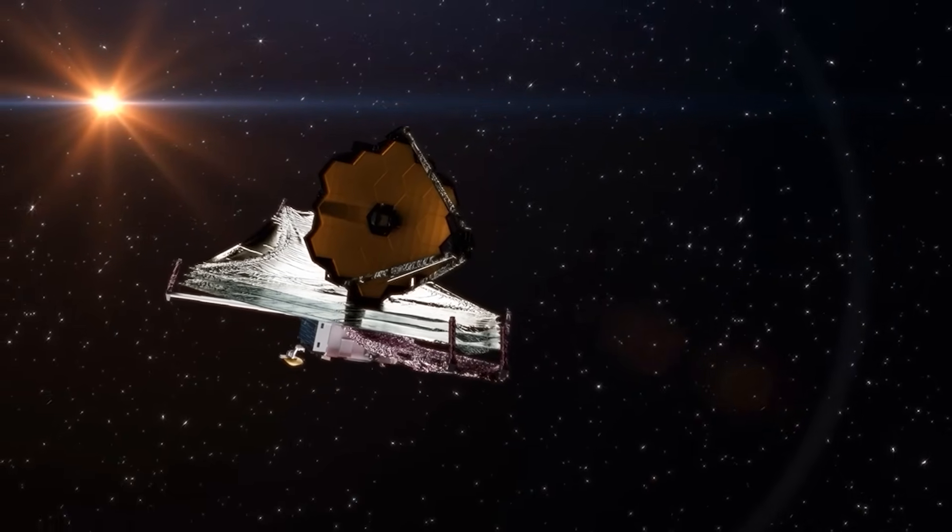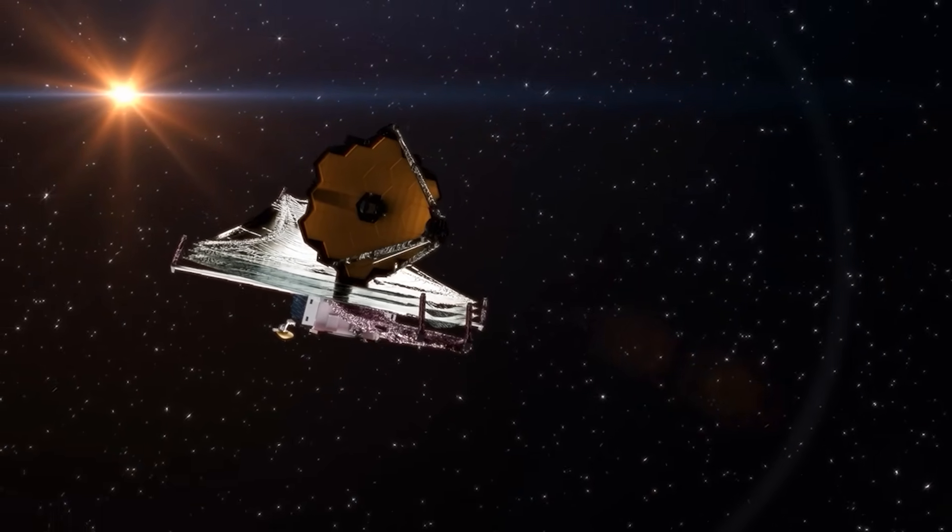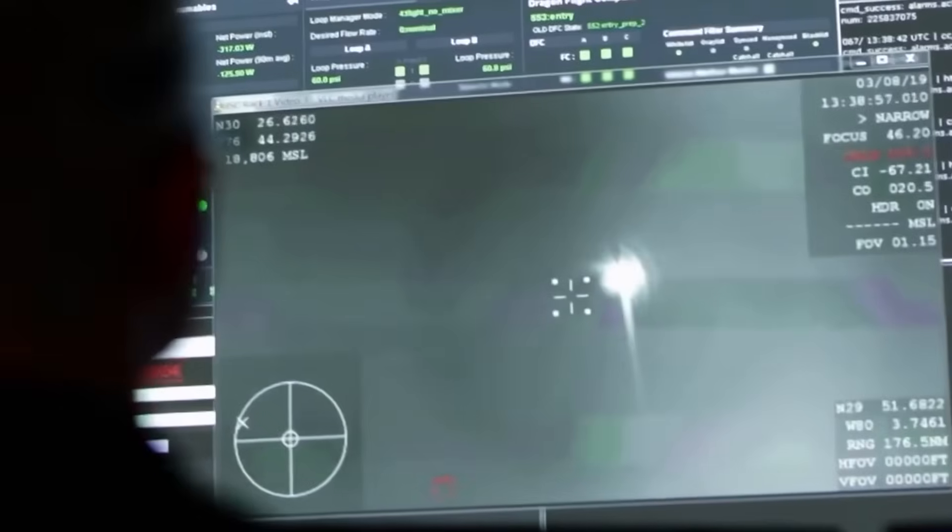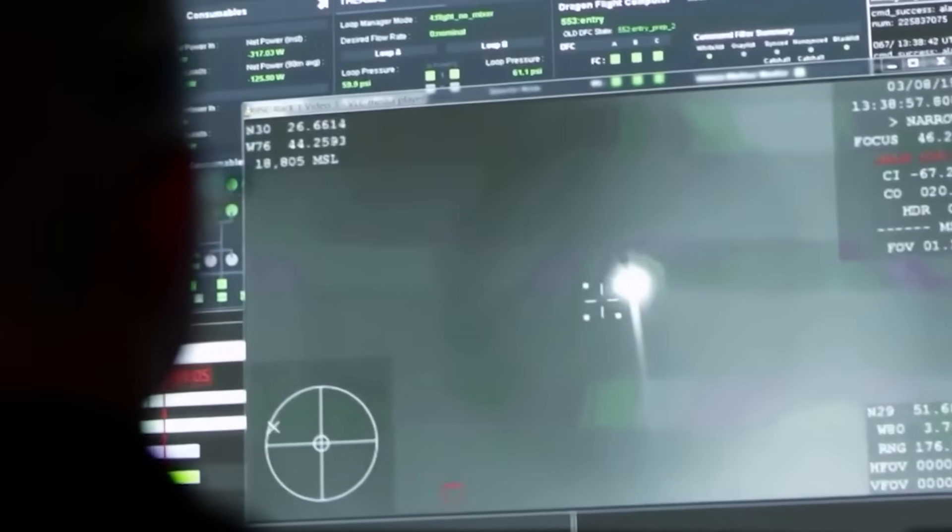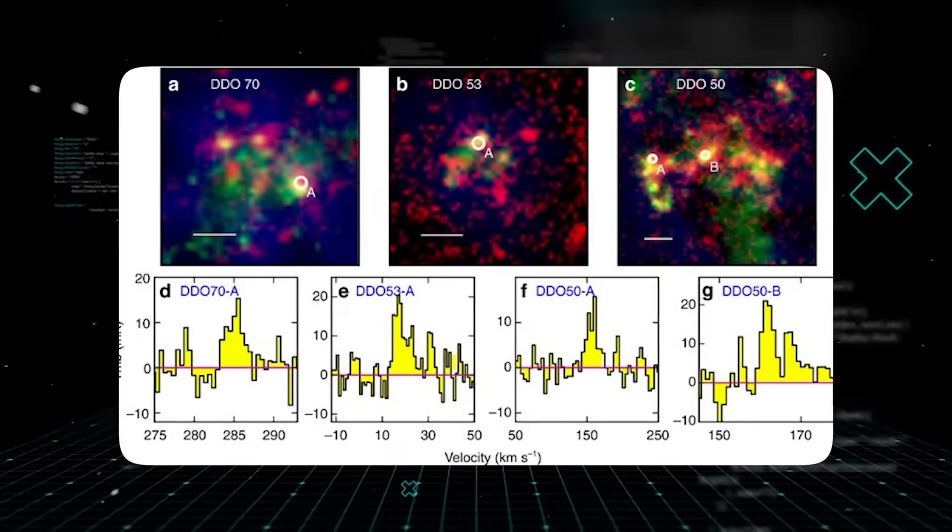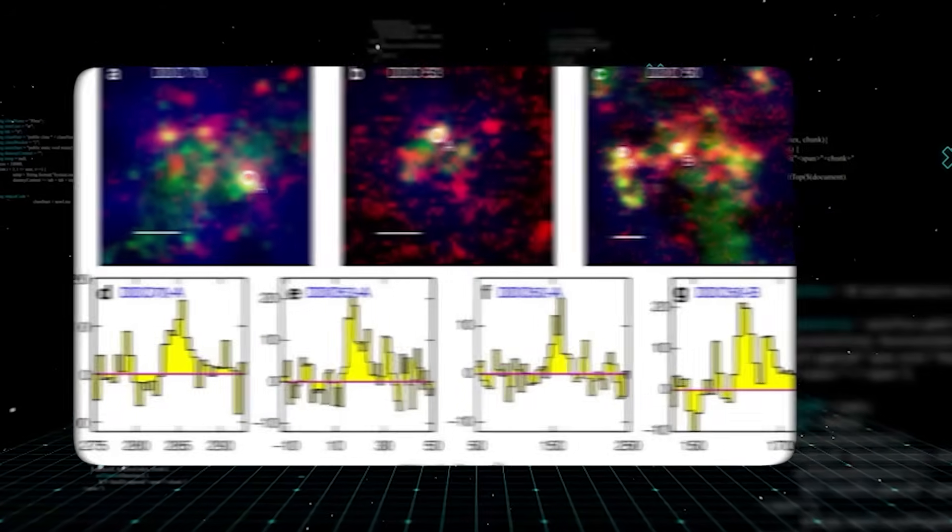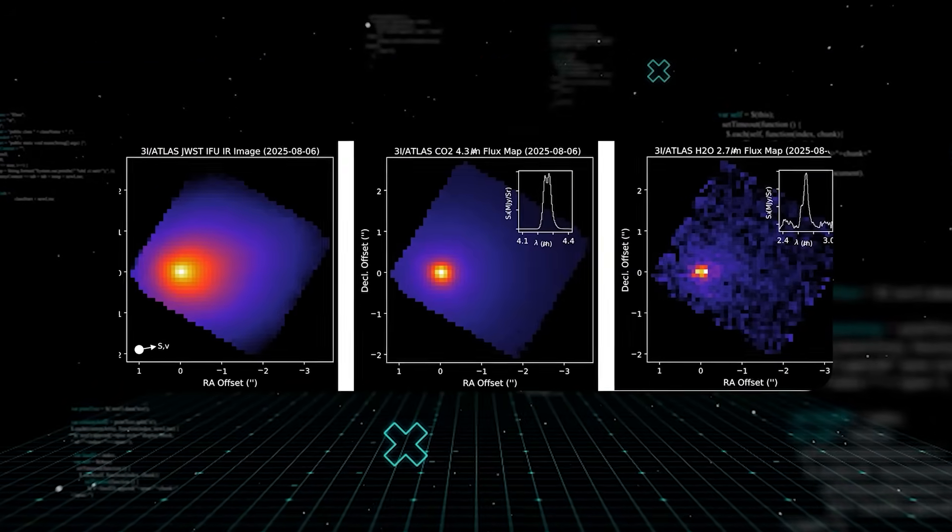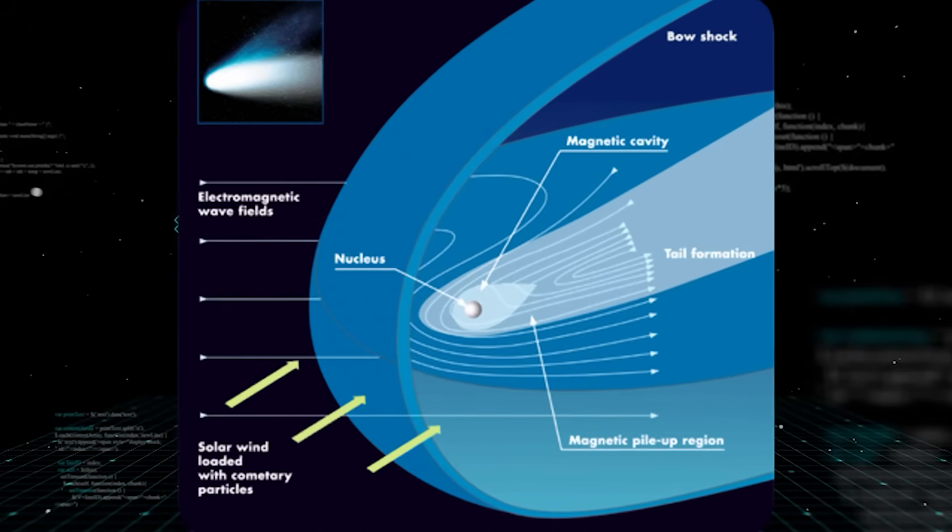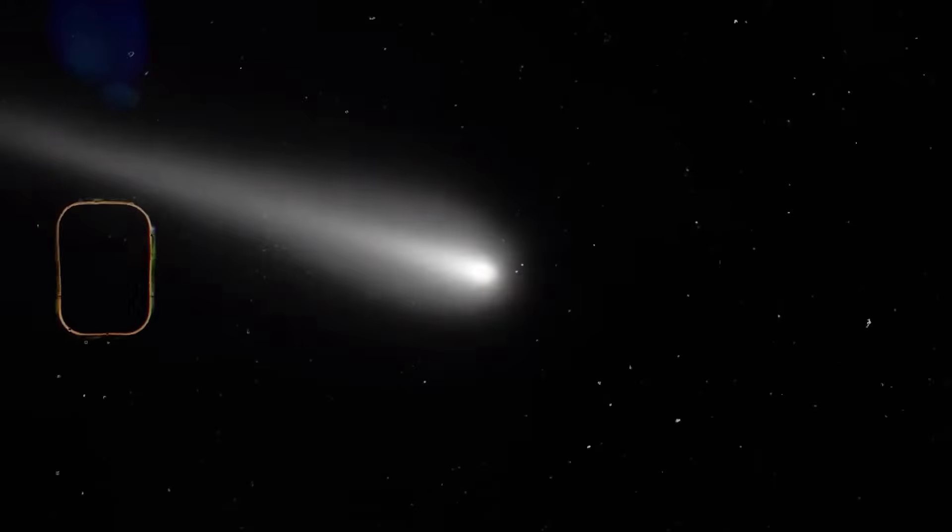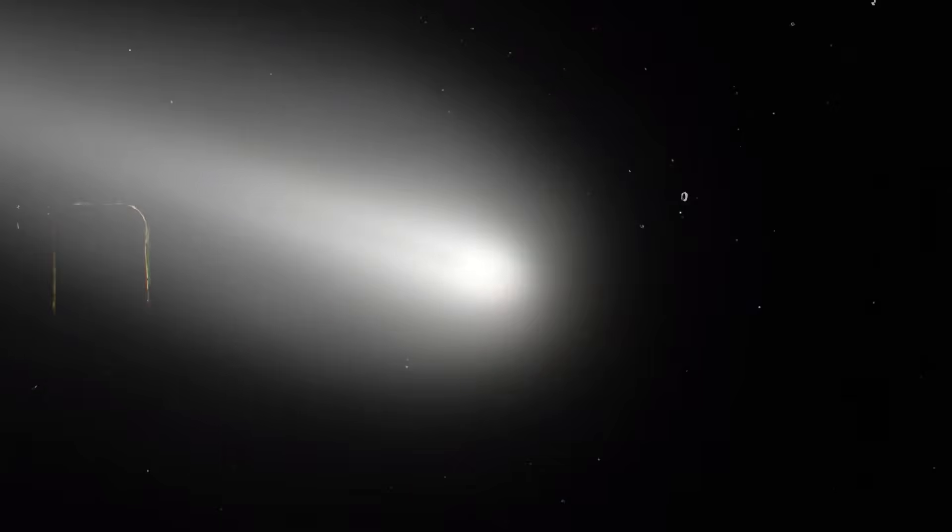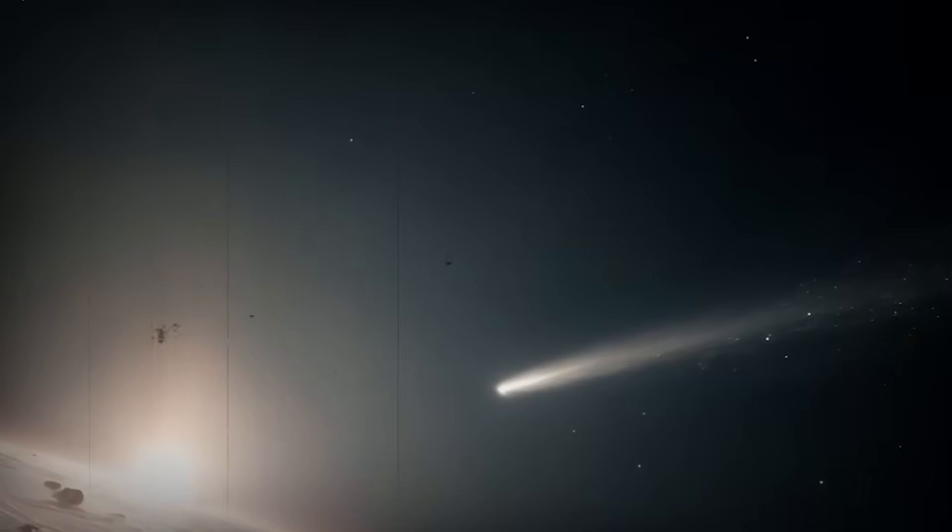With James Webb fully online, scientists wasted no time pointing it toward 3-Eye Atlas. What it saw left even the most skeptical astronomers speechless. First, the thermal readings. Unlike comets or asteroids, which typically emit heat in random bursts as ice sublimates and surface materials react to solar radiation, 3-Eye Atlas showed a consistent rhythmic pattern of heat emission, like a signal. Not chaotic, not random, but pulsed, measured.